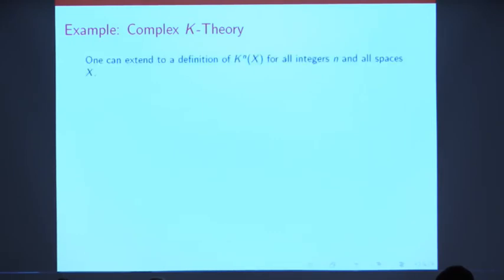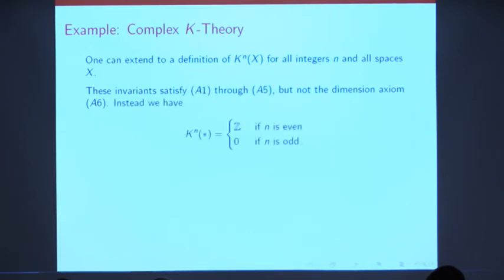So I've told you what K^0 of X is when X is a finite cell complex. This definition can be extended to define K^N of X for any integer N in any topological space X. And if you make that extension, what you get is a generalized cohomology theory. You get some invariants which satisfy axioms A1 through A5, but which do not satisfy the dimension axiom. If you look at the K-theory of a point, what you get is instead Z in every even degree and 0 in every odd degree. So rather than being concentrated in degree 0, this is periodic with period 2. And that periodicity is the subject of the famous Bott periodicity theorem.